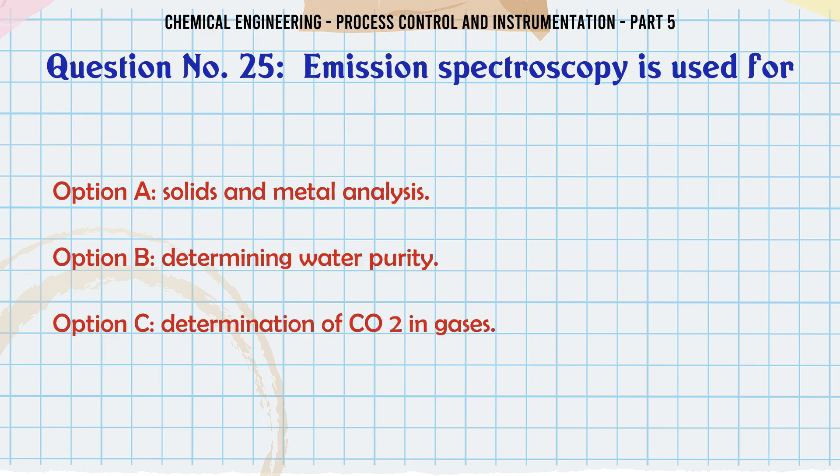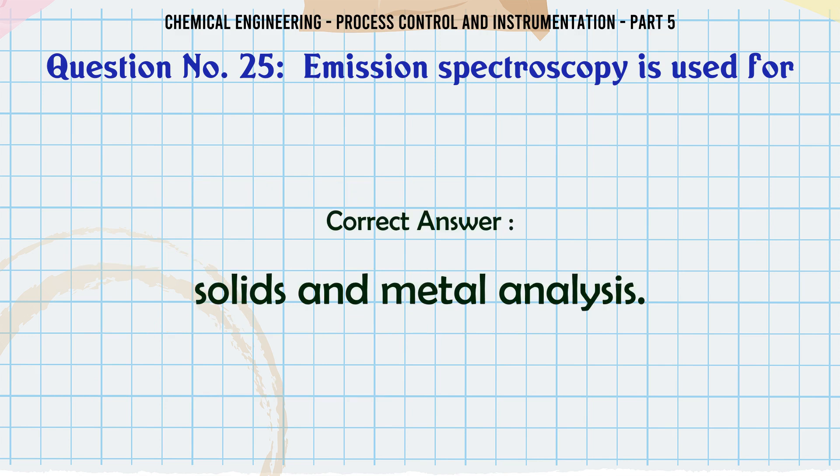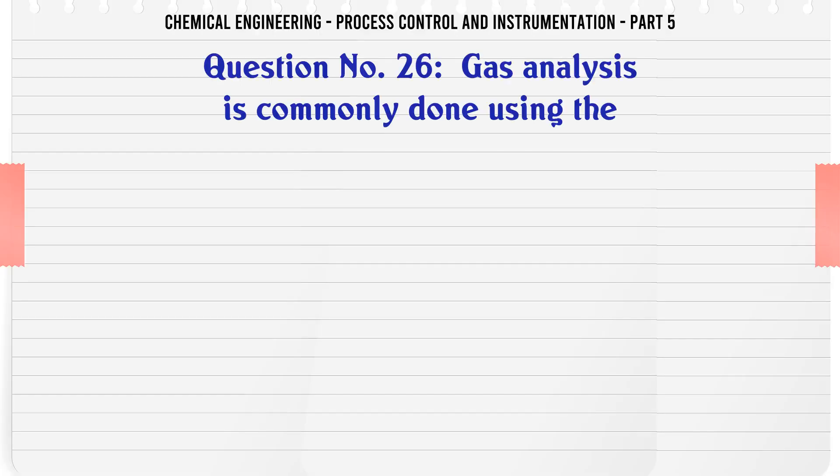Emission spectroscopy is used for: A. Solids and metal analysis. B. Determining water purity. C. Determination of CO2 in gases. D. NOx determination. The correct answer is Solids and metal analysis.